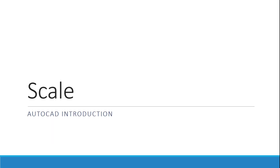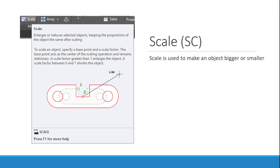The scale command is basically going to allow you to make things bigger or smaller, depending on what base point you select. I can make something bigger, smaller, or make a copy of it at a different scale. It's a very good command if you know the scale factor you want. You can also use a reference, so you don't have to know the exact dimensions — you can match the size of something else on the screen.